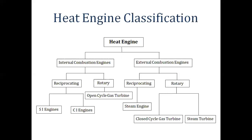Internal combustion engines and external combustion engines are each divided into reciprocating and rotary types. Examples of reciprocating internal combustion engines are SI engines — which we call petrol engines, used in bikes and cars — and CI engines, which we call diesel engines, used in locomotives and trucks. The rotary internal combustion engine is the open-cycle gas turbine. If a gas turbine operates in open cycle, it is an internal combustion engine. Under external combustion engines, we have the reciprocating steam engine and rotary types such as the closed-cycle gas turbine and steam turbine.